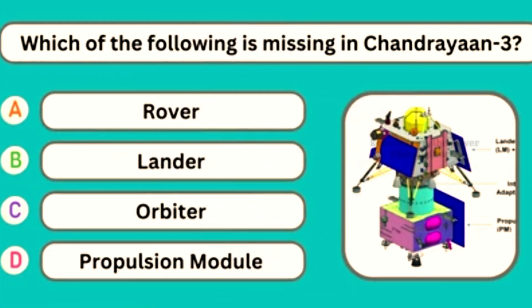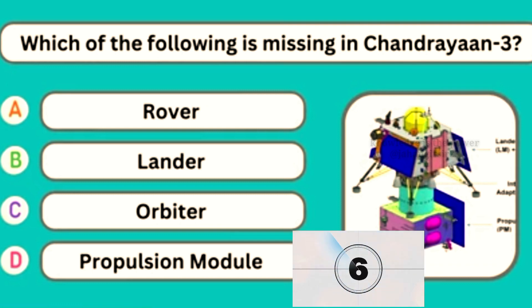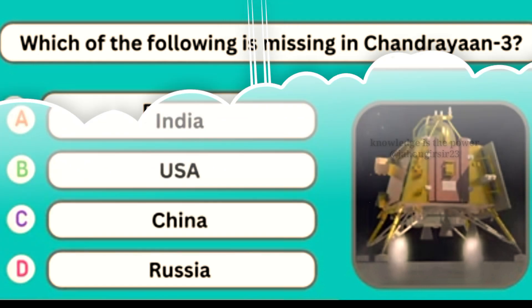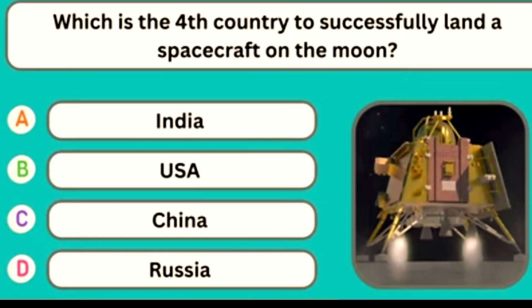Which of the following components is missing in Chandrayaan-3? Option C — Orbiter. Which is the fourth country to successfully land a spacecraft on the moon? Option A — India.